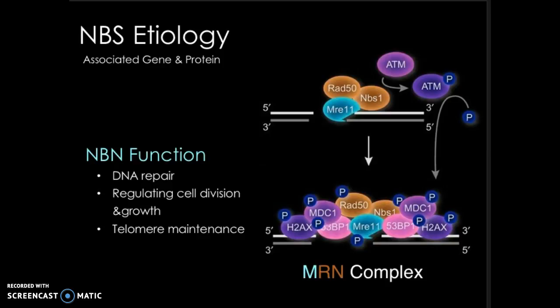NBN cellular function is vital for organism survival. The protein has three major functions: the repair of DNA, the regulation of cell division and growth, and the maintenance of telomeres — most important being its role in preserving DNA. As seen in the picture on the right, Nibrin works with two other proteins, MRE11 and RAD50, to form a complex called MRN.